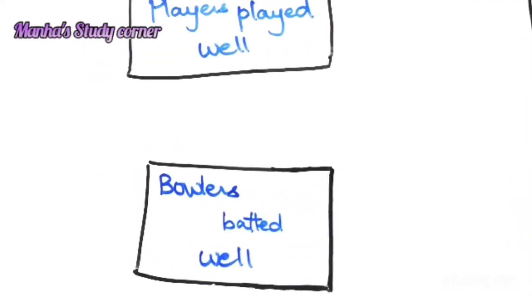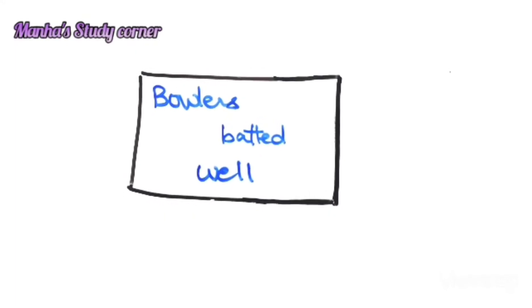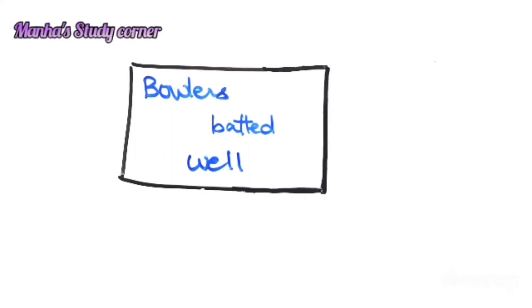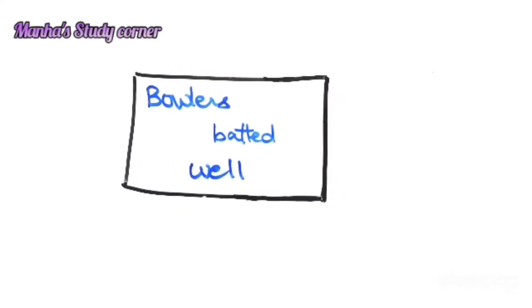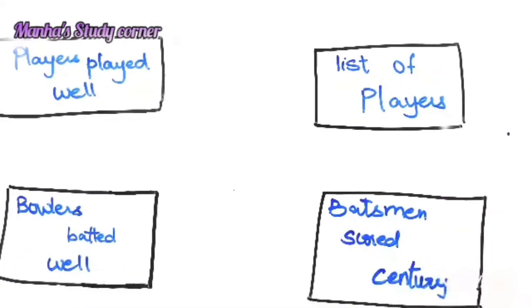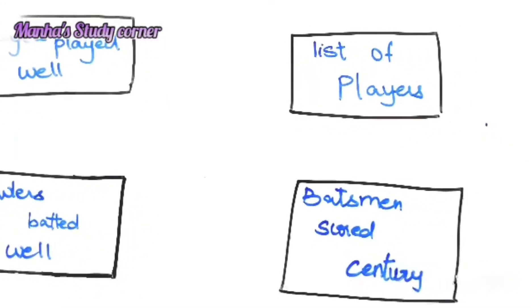Let's think of an easier way. What about bowlers who batted well? Would it be a fun group? I am guessing not. It's again not very easy to fill. So what's happening here? There are some groups that are much easier to fill than the others, right?